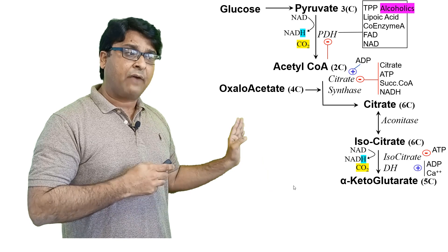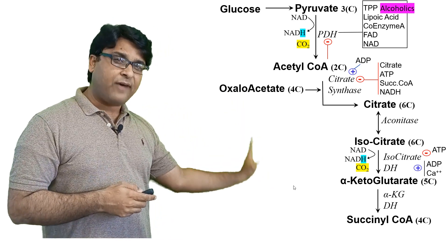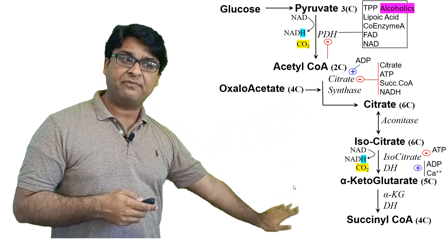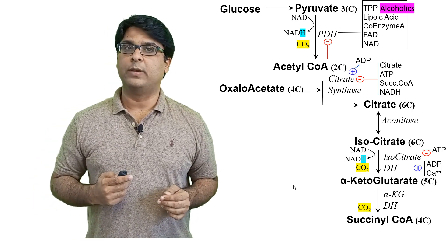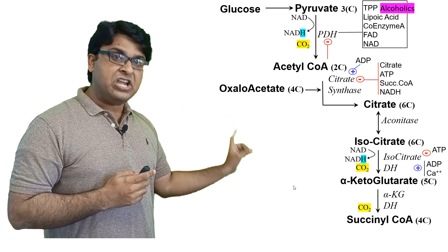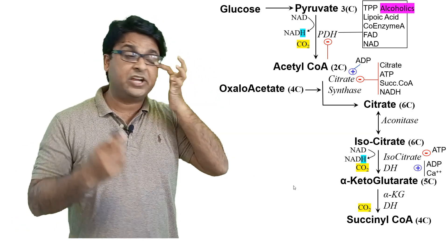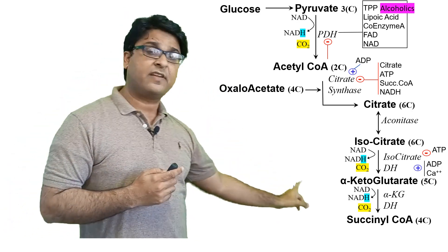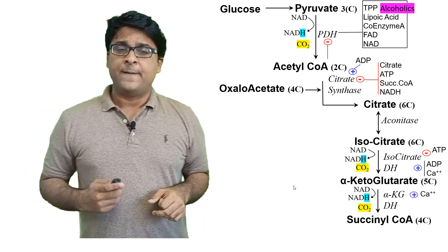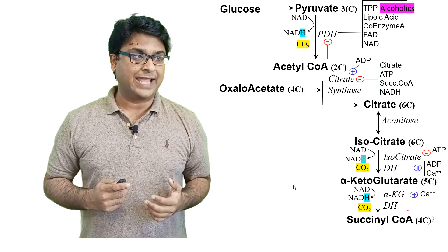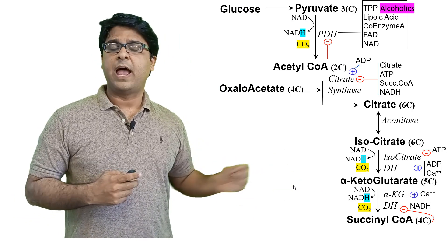After alpha-ketoglutarate we get succinyl-CoA, which is a 4-carbon compound. From a 5-carbon compound to a 4-carbon compound, you should now understand that a carbon dioxide molecule is released. The enzyme is alpha-ketoglutarate dehydrogenase — again a dehydrogenase — so another NAD is converted into NADH. This step is positively regulated by calcium and negatively regulated by its own products, succinyl-CoA and NADH.